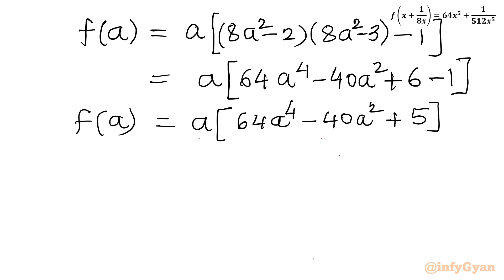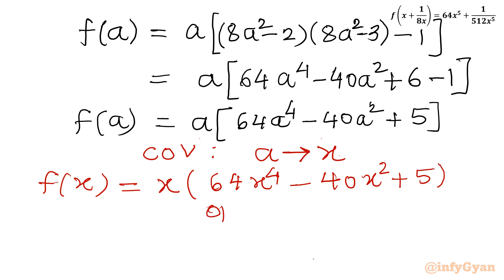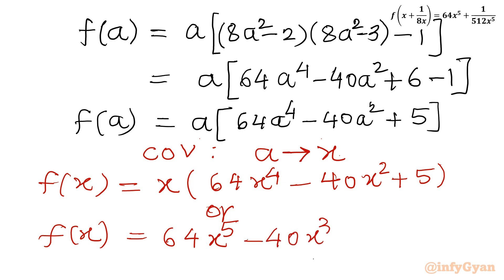Now I will change the variable by swapping a with x. So I can write: f(x) = x(64x⁴ − 40x² + 5), which expands to f(x) = 64x⁵ − 40x³ + 5x. We can write either form — the factored form x(64x⁴ − 40x² + 5), or the expanded form f(x) = 64x⁵ − 40x³ + 5x. Out of these two, we can write any f(x) as our answer.